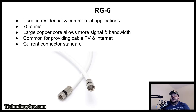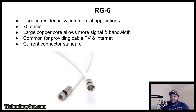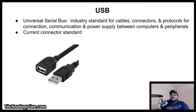The RG6 connector is a common type of coaxial connector used in a variety of residential and commercial applications, and also has a characteristic impedance of 75 ohms. RG6 has a larger copper core than RG59, which allows for more signal and bandwidth. RG6 is commonly used for providing cable TV and internet provided by a cable provider. RG6 is considered to be a current connector standard.